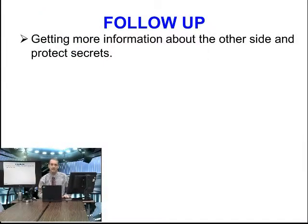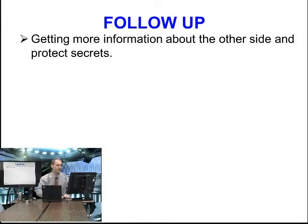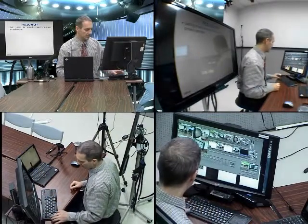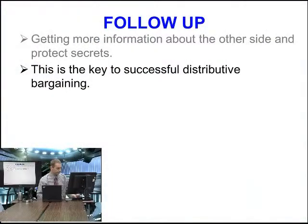Look back at the conversation, at the dialogue. You can see that each side is trying to say, your information is wrong, let me tell you my information. So both sides are always trying to influence or give out that information because information is king in a negotiation. Information is everything. This is key to a successful distributive bargaining.